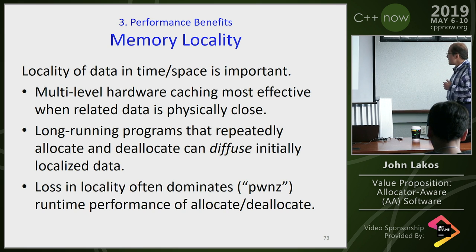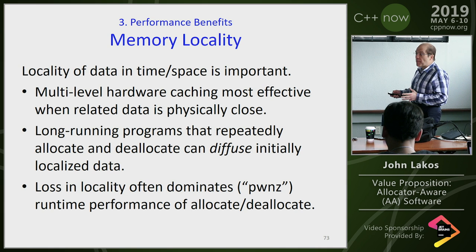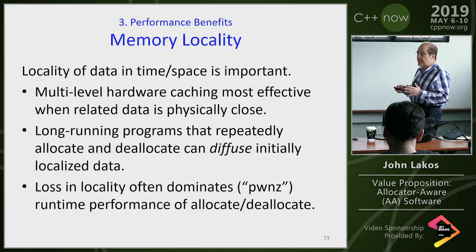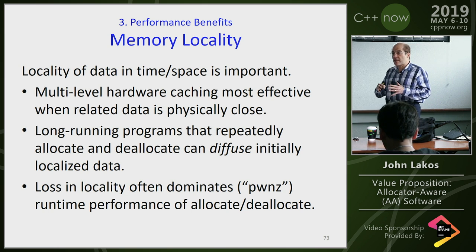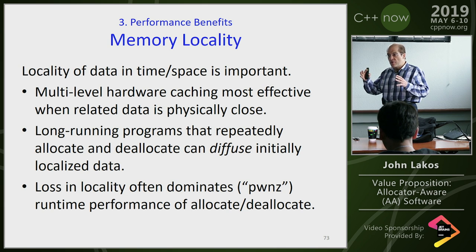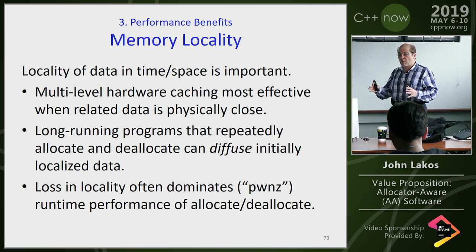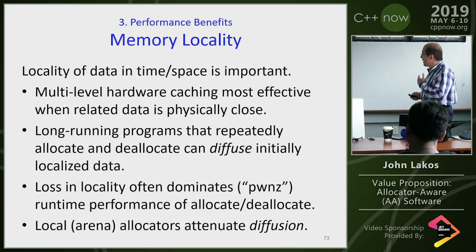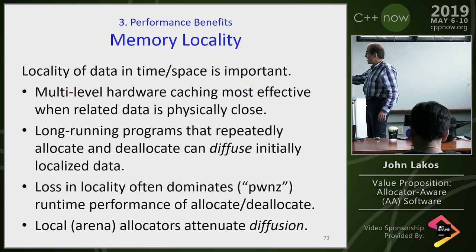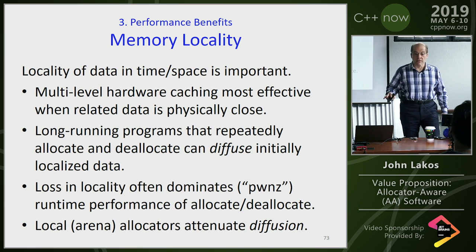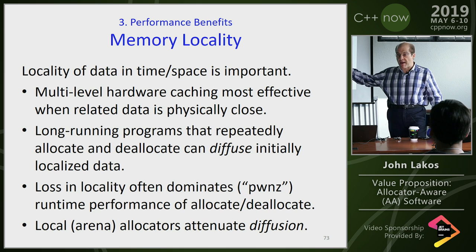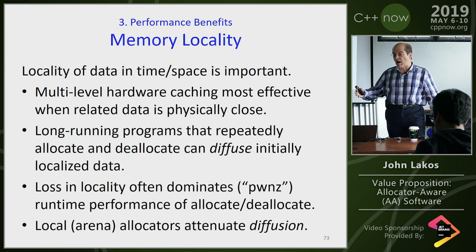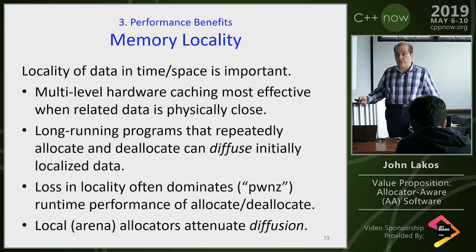Loss in locality dominates everything. We found around 2^18 elements as a threshold — soon as you exceed it, you start getting paging effects. When diffusion is allowed to occur, you can get an order of magnitude loss in performance, sometimes more. The whole point of local allocators is not to eliminate diffusion entirely, but to decrease it from an order of magnitude disaster back to maybe a factor of two, which is huge.